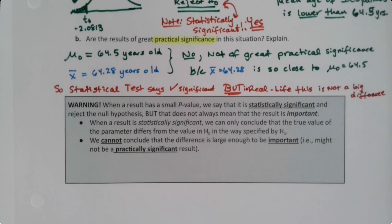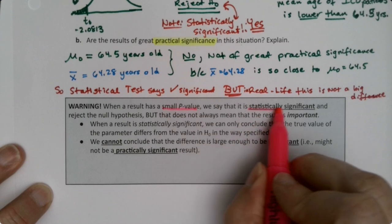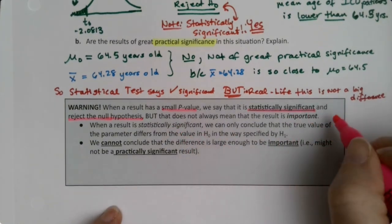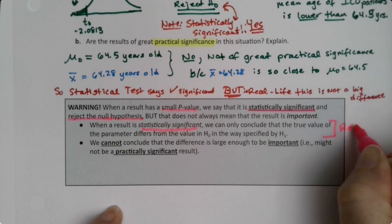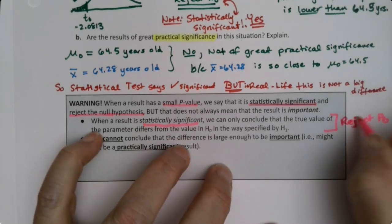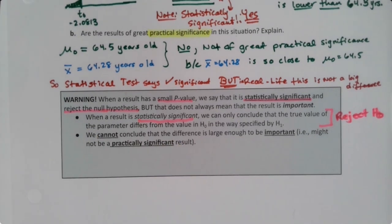When we have a small p-value, we say that the result is statistically significant, which means it checks the boxes — you reject H-naught. That is what statistical significance means. But that does not always mean that the result is practically important in real life. It just means that you got to reject H-naught. Statistical significance only means you get to reject H-naught — that is all it can mean. It doesn't speak to real life; it's just a process.